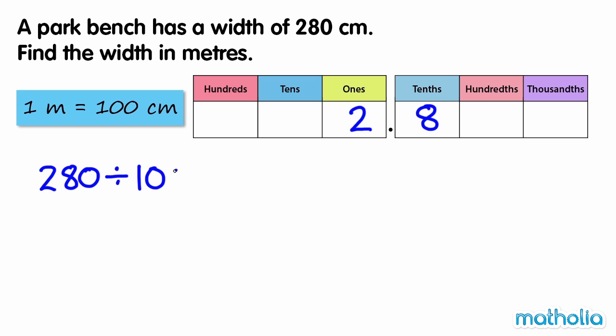280 divide 100 equals 2.8. So 280 centimetres equals 2.8 metres.